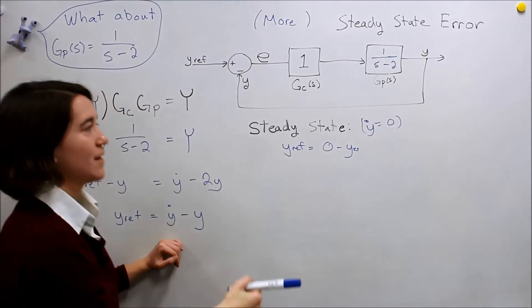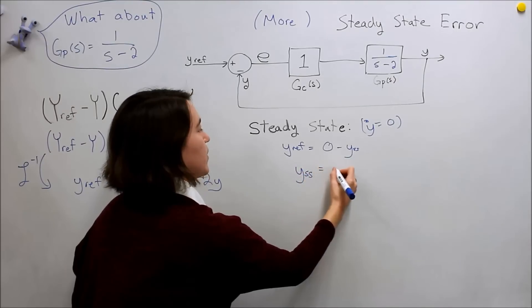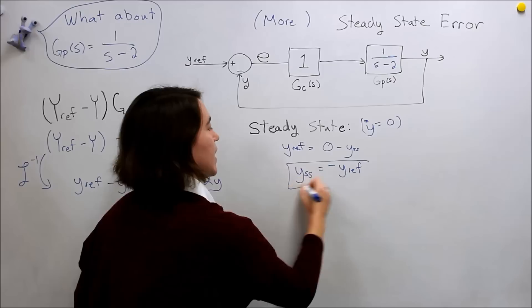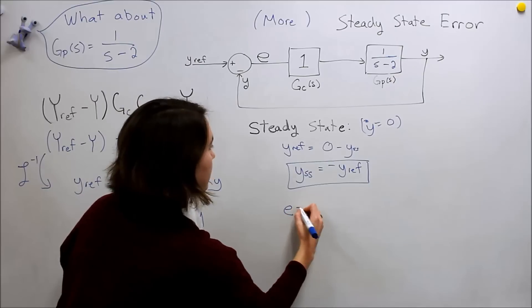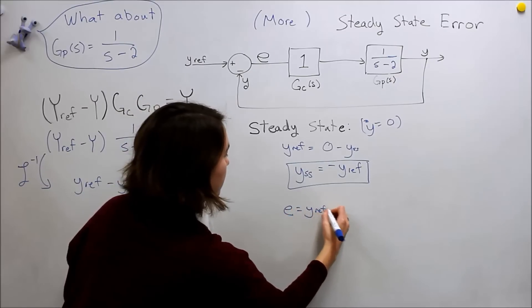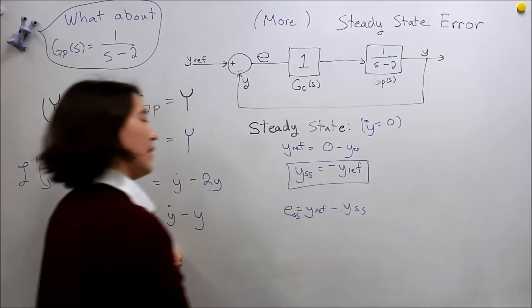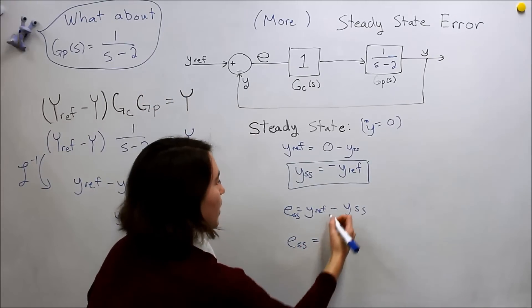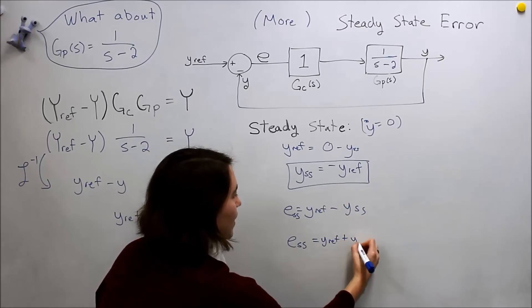So that means that our y steady state is equal to negative y ref, and if we calculate the error from that, the error is y ref minus, this is steady state, minus y steady state, then our steady state error would be simply y ref minus a negative, so plus y ref.